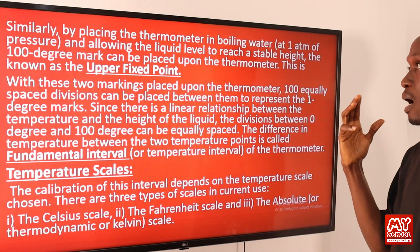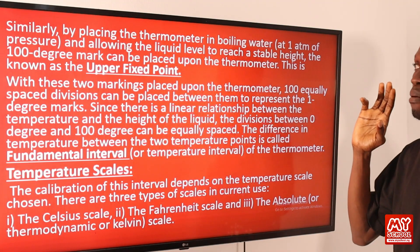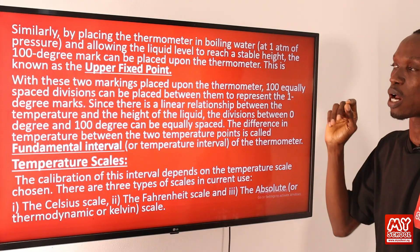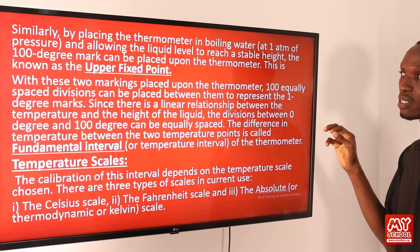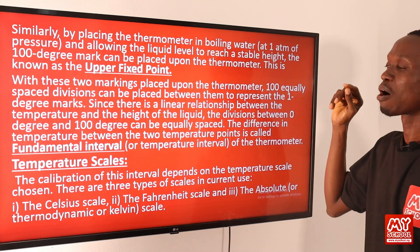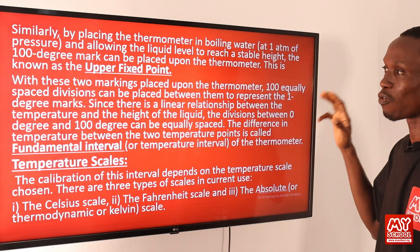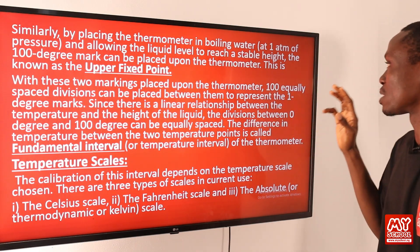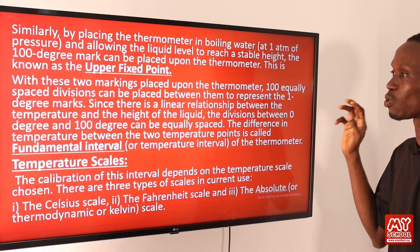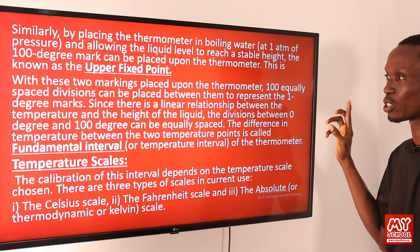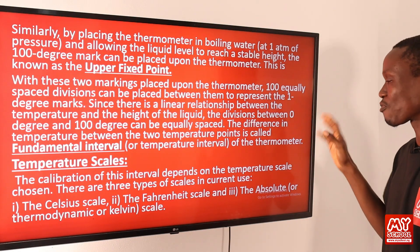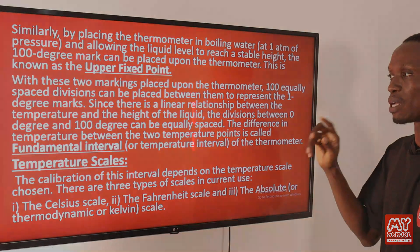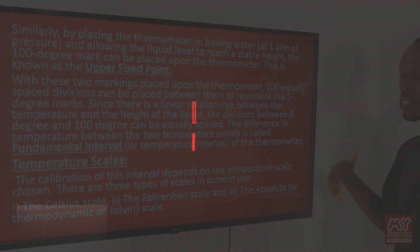Similarly, by placing the thermometer in boiling water at one atmosphere and allowing the liquid level to reach a stable height, the 100-degree mark is placed on the thermometer. This is the upper fixed point, defined as the temperature of steam from pure boiling water at standard atmospheric pressure of 760 mmHg. With these two markings, 100 equally spaced divisions are placed between them to represent each one-degree mark. Since there is a linear relationship between temperature and the height of the liquid, the divisions between 0° and 100° are equally spaced. The difference in temperature between the two fixed points is called the fundamental interval.